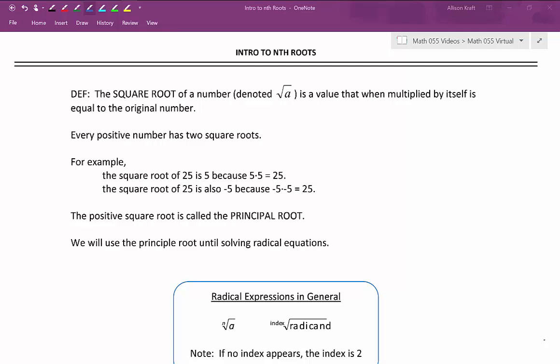The square root of a number is a value that when multiplied by itself is equal to the original number. Every positive number has exactly two square roots. For example, the square root of 25 is positive 5 because positive 5 times positive 5 is 25. But the square root of 25 is also negative 5 because negative 5 times negative 5 also gives us positive 25.